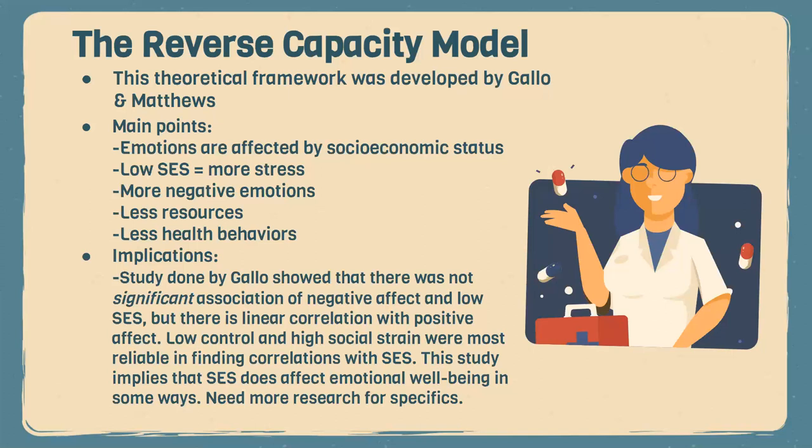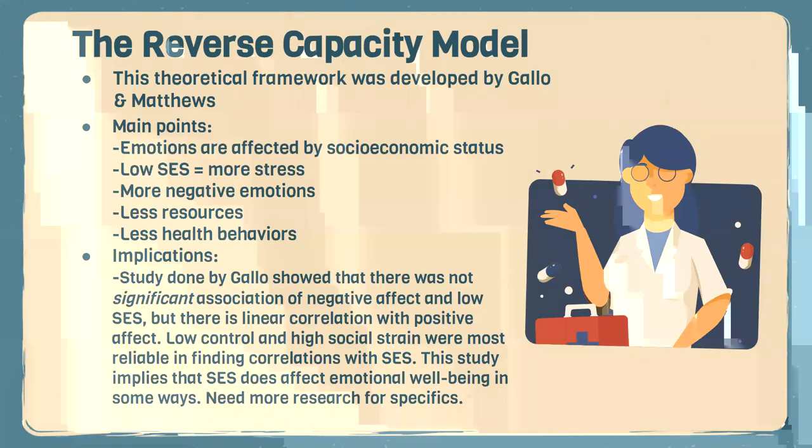They conducted a study on 108 women to see what specific factors of SES were affecting overall emotional well-being. They used EMA — ecological momentary assessment — meaning the women reported events in their lives as they were happening rather than relying on memory, allowing for clearer data. They examined several factors relating to SES and found that social conflict and feeling in control of one's life were the biggest correlators. The implications show that overall well-being is affected by SES, and more research is needed to specify how to help reduce the effect of SES on emotional well-being and physical activity.